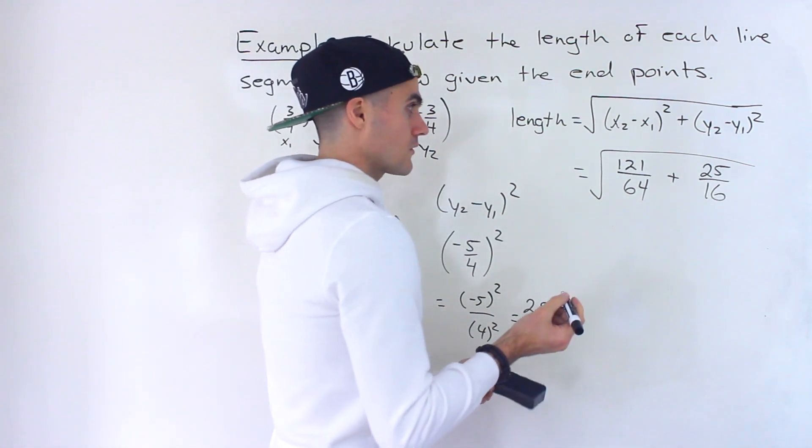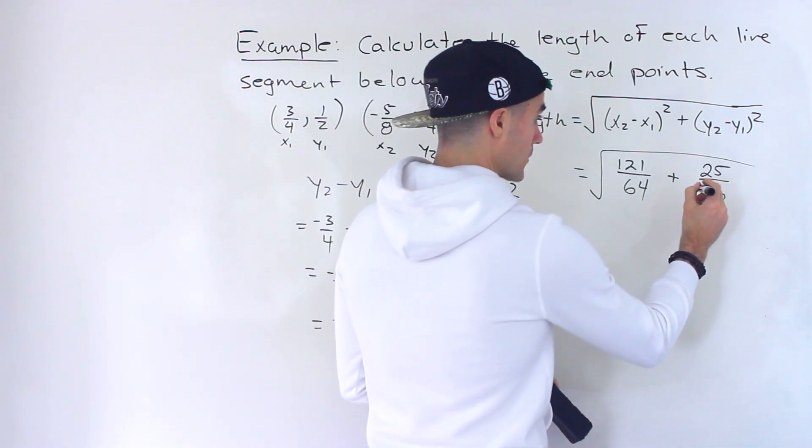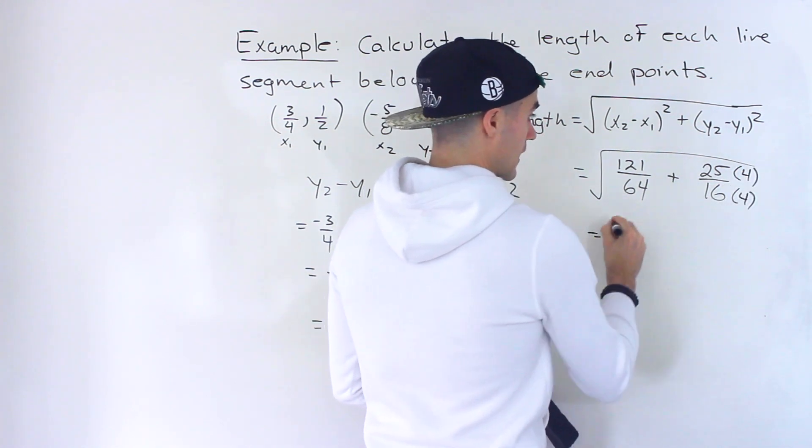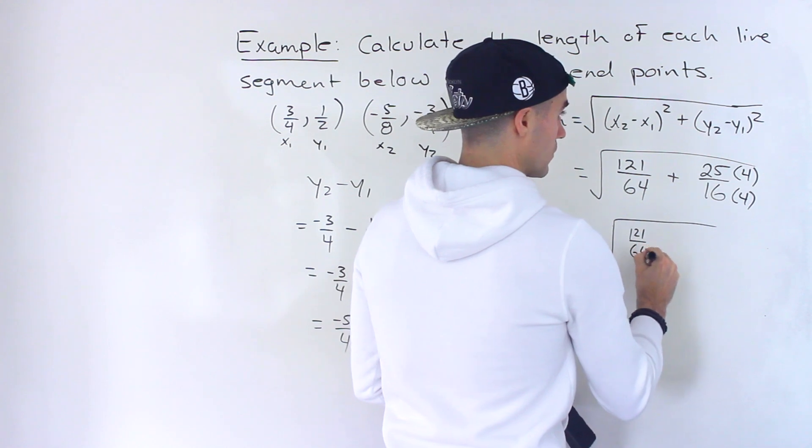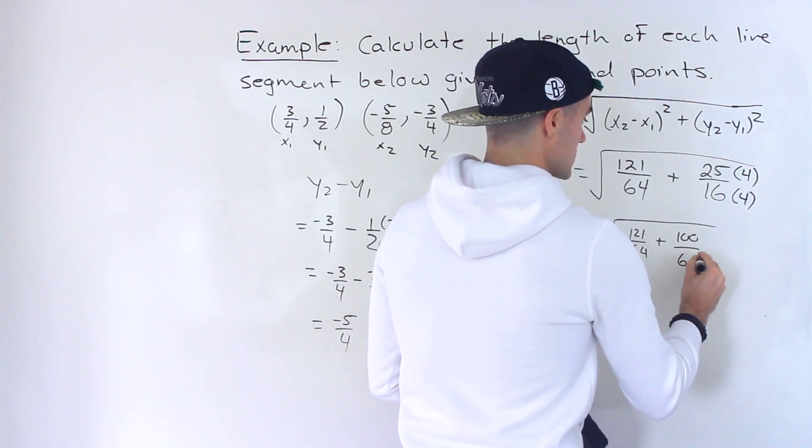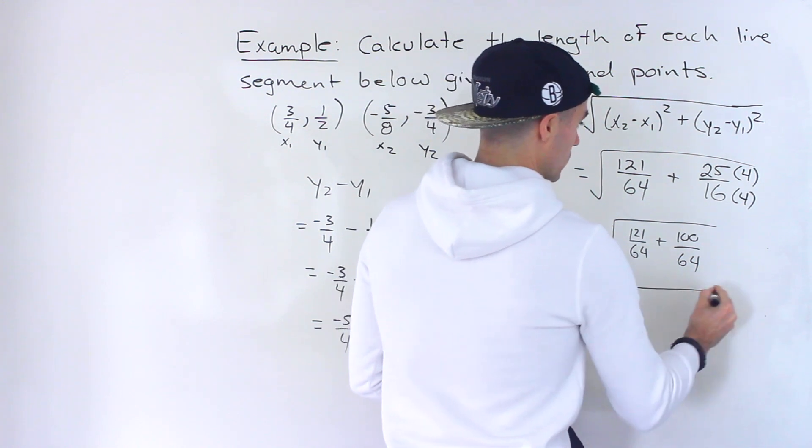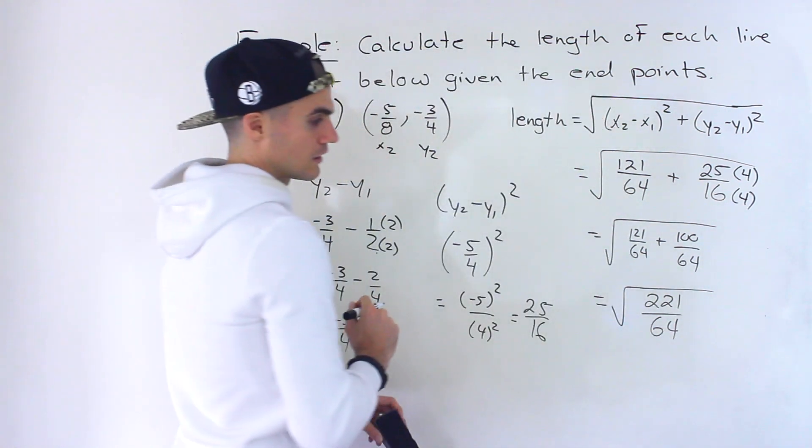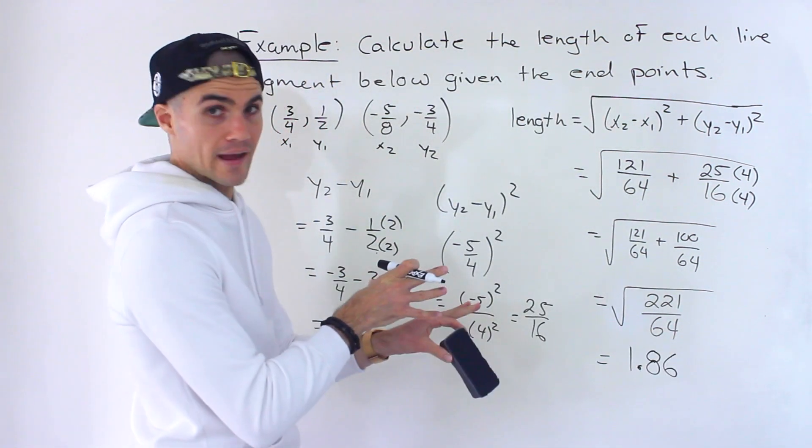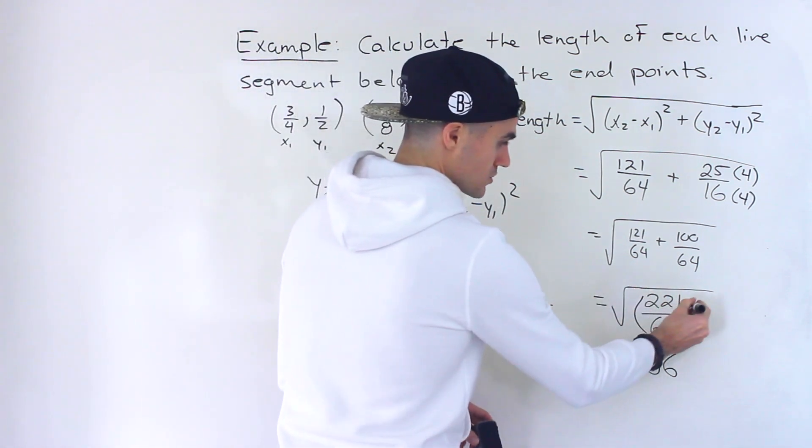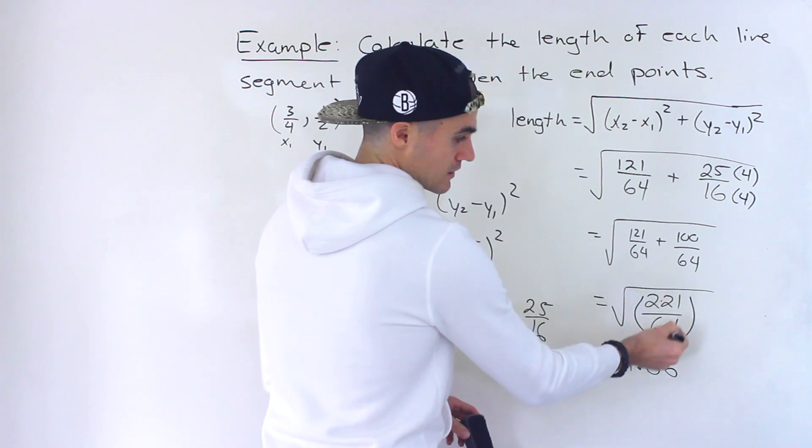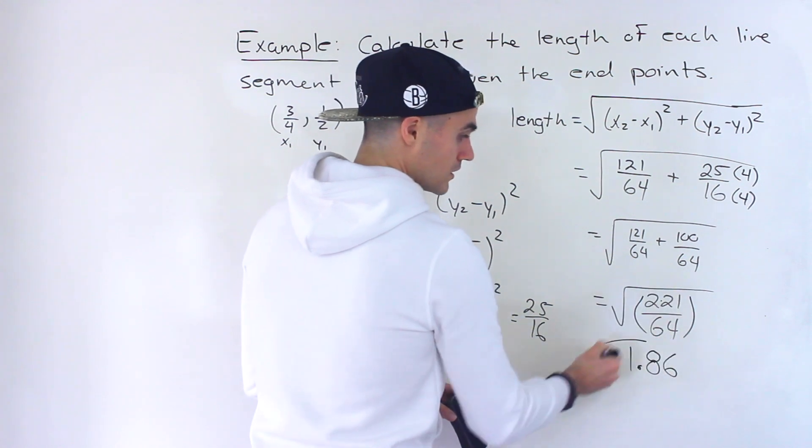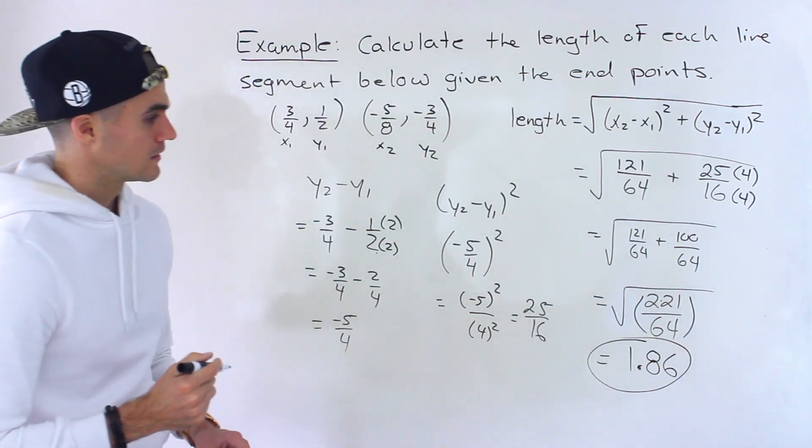Now from here, we just got to add these fractions. So common denominator would actually be 64, because we can multiply this by 4. Multiply that by 4. So we'd have the square root of 121 over 64 plus 100 over 64, which would give us the square root of 221 over 64, like that. And if you wanted to get the decimal, plug that in to your calculator. Just when you're square rooting this, make sure that you put that in brackets. Or you could just take this and divide it by that and get a decimal. I think it'll be like around 3.4 something. And then square root that number to get 1.86.